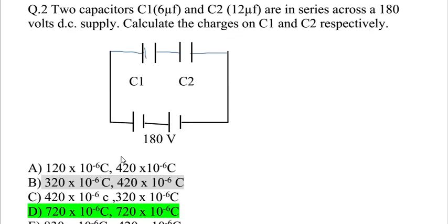Now let's go to question number 2. If you have 4 to 5 lengthy MCQs in a paper, you need to practice such questions. Question 2: Two capacitors, C1 equals 6 microfarads and C2 equals 12 microfarads, are in series across 180V DC supply. Calculate the charges on C1 and C2.